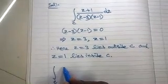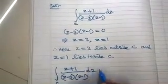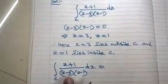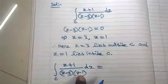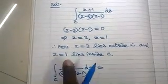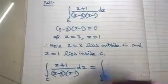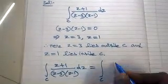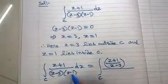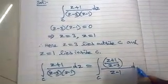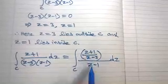In the given integral, the denominator has two terms. The outside value (z−3) is taken into the numerator, and the inside value (z−1) is kept in the denominator. So the integral becomes integral over C of f(z) divided by (z−1) dz, where f(z) equals (z+1)/(z−3). This matches Cauchy's integral formula.